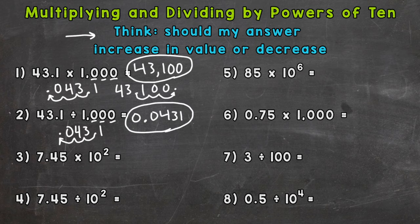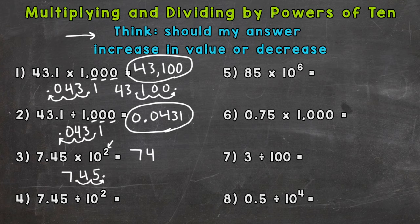Number 3, we have 7 and 45 hundredths times 10 to the second power, which means 10 times 10, which is 100. Here our power of 10 is written in exponential form — written with an exponent of 2. That exponent tells us how many times we move the decimal to push everything to the correct place. We're multiplying, so we need to increase the value and move the decimal to the right twice: 1, 2 — it goes at the end, and we get 745.